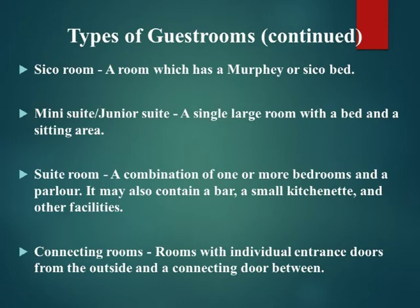Psycho room: a room which has a Murphy or Psycho bed. Mini suite, junior suite: a single large room with a bed and a sitting area. Suite room: a combination of one or more bedrooms and a parlor. It may also contain a bar, a small kitchenette, and other facilities. Connecting rooms: rooms with individual entrance doors from the outside and a connecting door between.